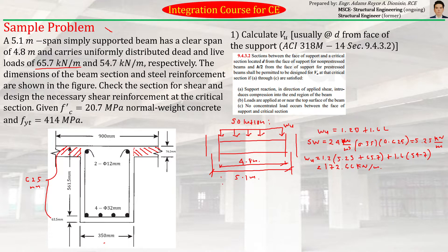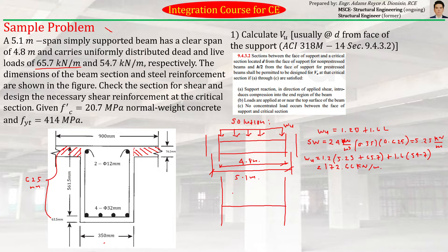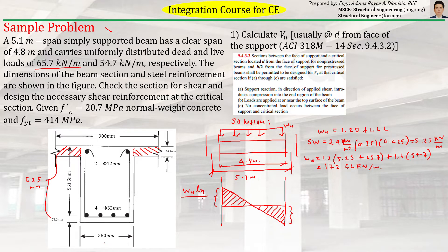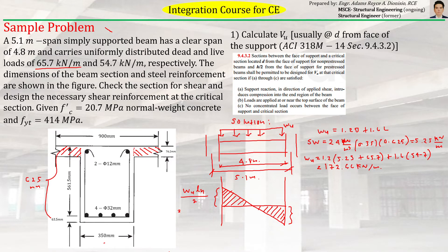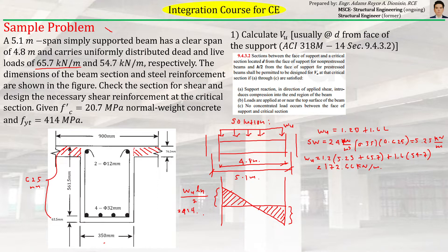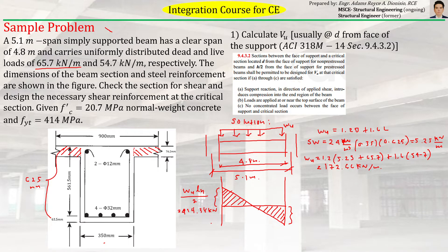The simply supported beam produces internal shear forces due to the applied load. For a simply supported beam with uniform load, the shear diagram varies linearly. The maximum shear force at the face of the support is equal to WU times the clear span LN divided by 2: 172.66 × 4.8 / 2 = 414.38 kN.